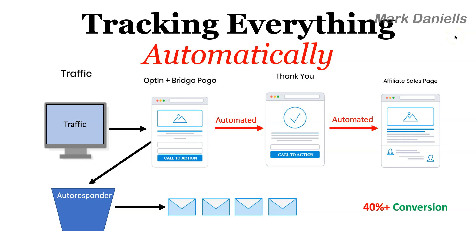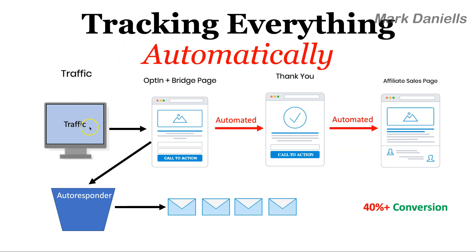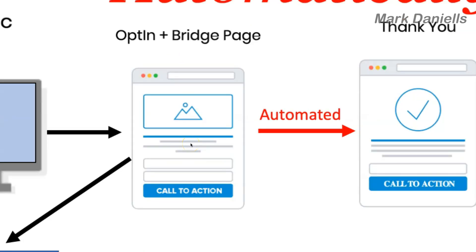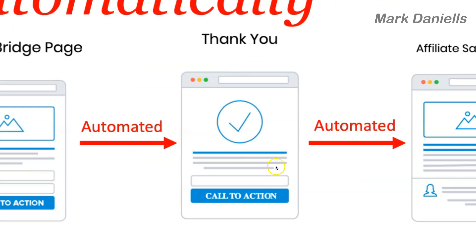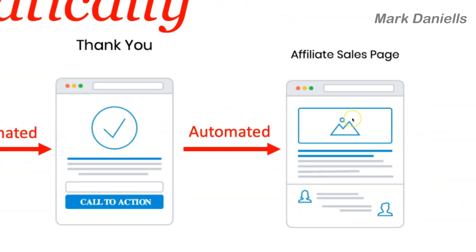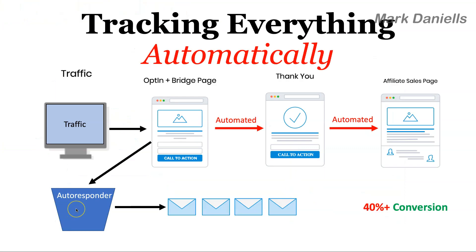I want the prospect to do just one thing — give me their email address and click once. That's it. It will take them to the bridge page, they click the button, and they go automatically to the thank you page, and then automatically — without them doing anything — to the affiliate sales page. Meanwhile, they're in my autoresponder and emails will go out automatically. I track everything, and it's up to you whether you want to track or not — but if you're not tracking, it's like driving in the dark.